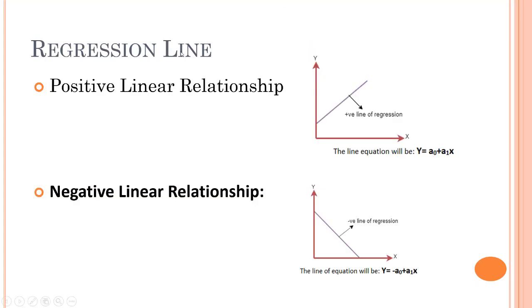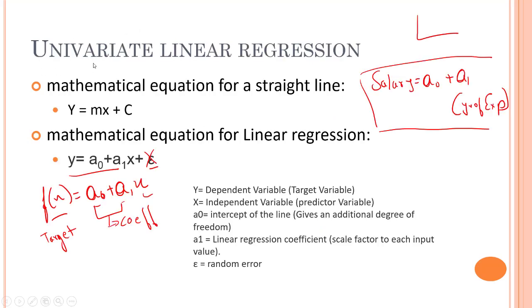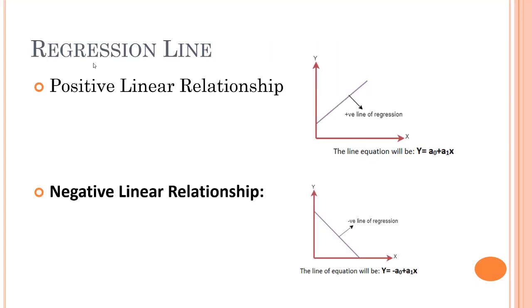Before diving deeper into the math of the equation y equals a₀ plus a₁x, let's learn about the regression line. We have two kinds of relationships: positive linear relationship and negative linear relationship. It depends on how our dataset looks and what kind of line we are expecting.